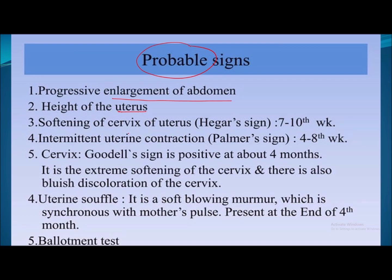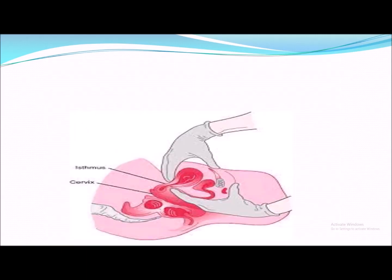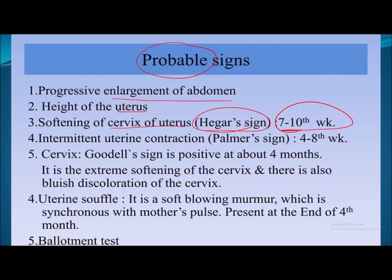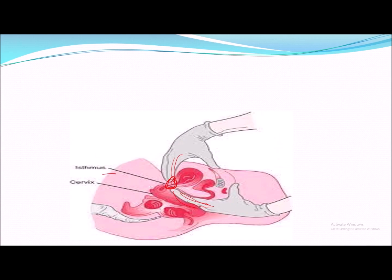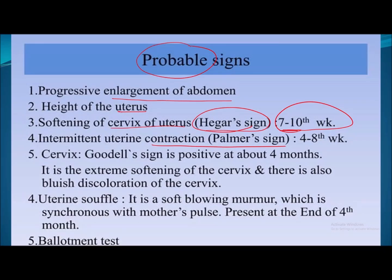Softening of the cervix of the uterus is known as the Hegar sign, seen between 7 to 10 weeks. To check it, insert fingers through the vagina and fingers from the lower abdominal wall — you can feel the soft lower uterine segment or cervix. Intermittent uterine contractions can also be felt between 4 to 8 weeks.